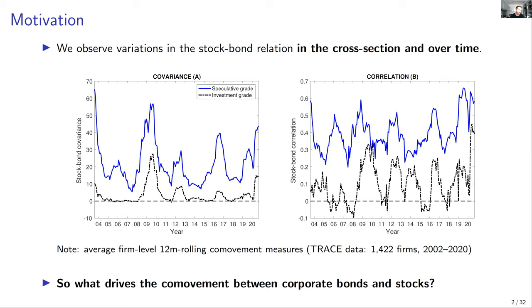Looking at those panels, the first striking thing is that, independently of whether we consider covariance or correlation, there is quite a bit of time series fluctuation — particularly during crisis and turmoil periods such as 2008 and around COVID. The cross-sectional variation can be observed by comparing the blue and black lines: during relatively calm periods, the spread between speculative and investment grade tends to increase, while it shrinks during market turmoil.